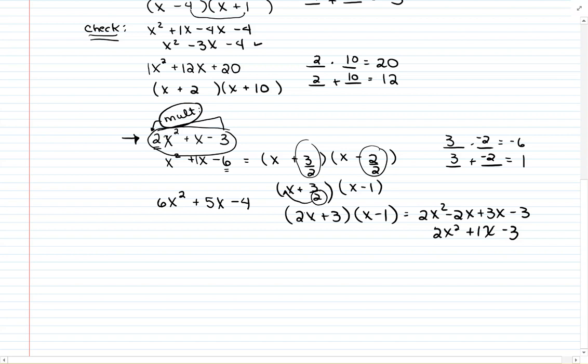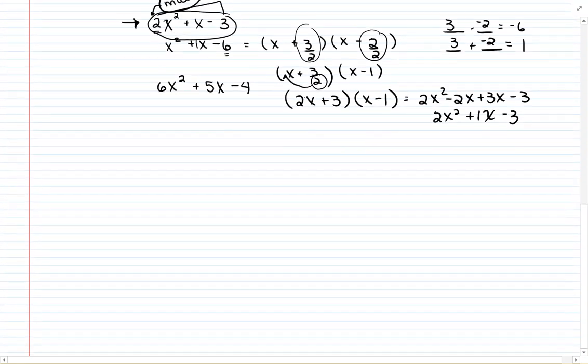So, let's try it with this next one here. 6x² + 5x - 4. I see I have the number 6 in front. So, I'm going to multiply, and I write this out just to remind myself that I'm going to have to divide. I'm going to multiply the 6 and the 4 together. So, I'm going to bring down the x² + 5x - 24.